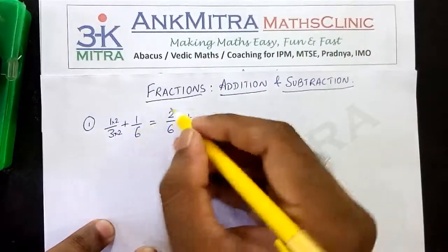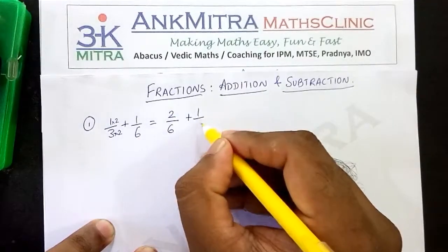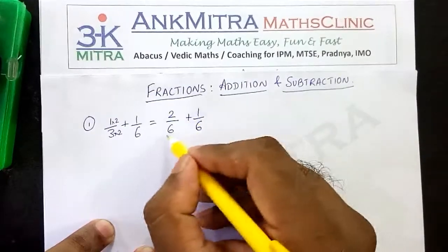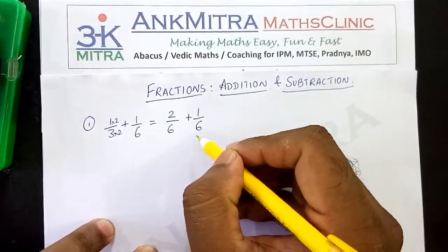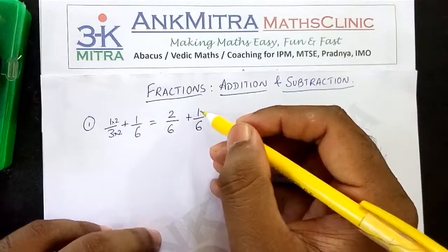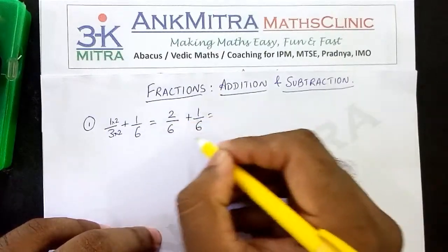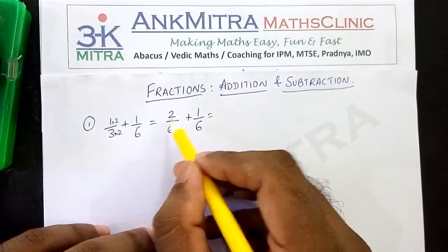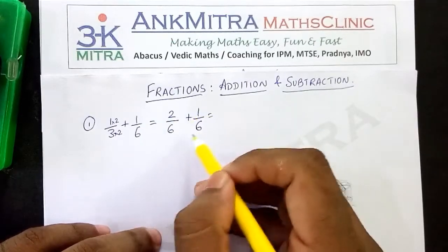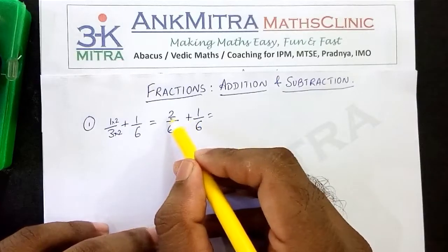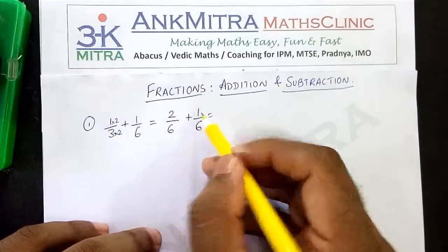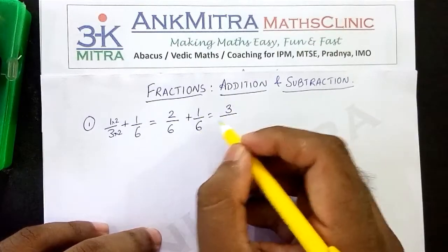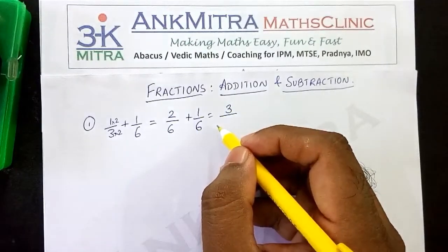The other fraction remains the same because it already has the denominator 6. So, 2 upon 6 plus 1 upon 6. Now the denominators are equal, so we can proceed with the addition of the numerators. While adding these fractions, when the denominators are equal, the numerators only get added — the denominators do not get added. So the numerators being added, it becomes 2 plus 1 that is 3. And the denominator already is equal — it remains the same, it does not get added.